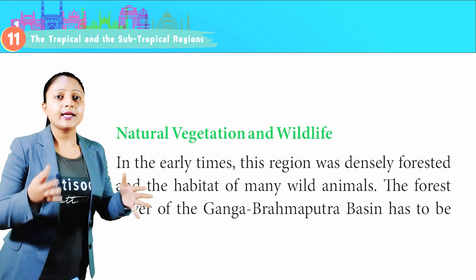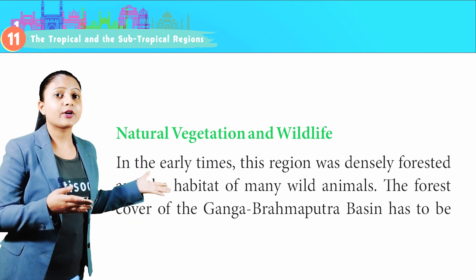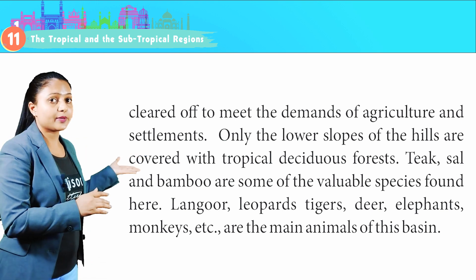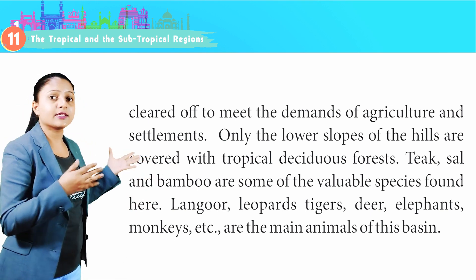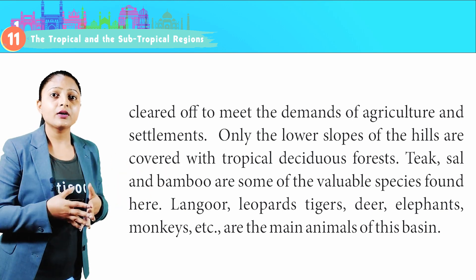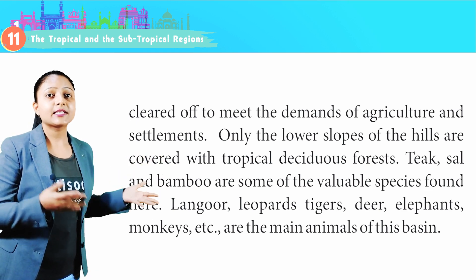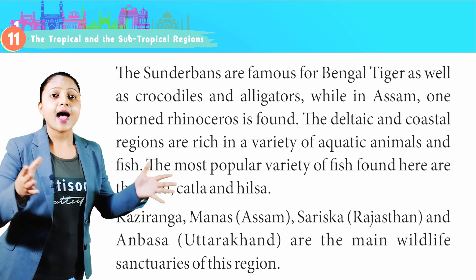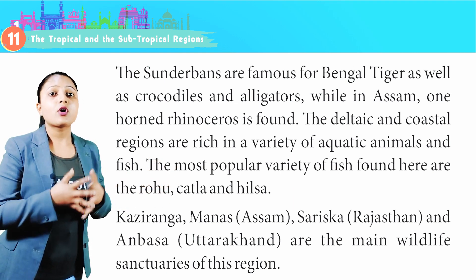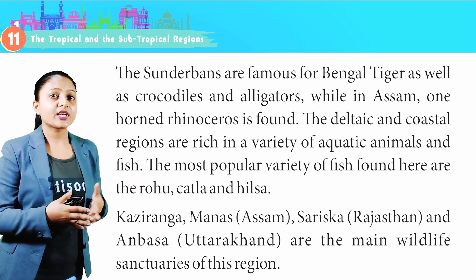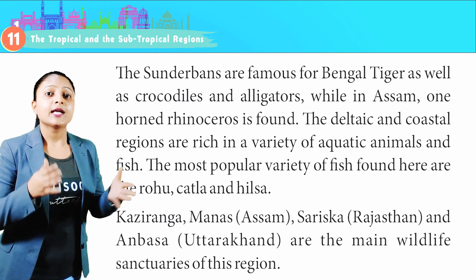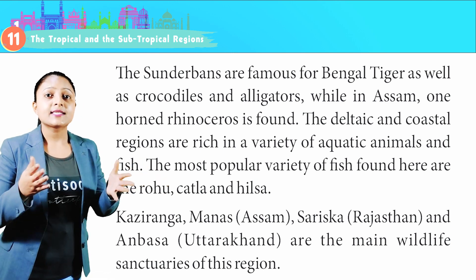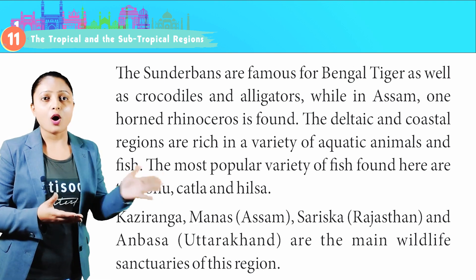Natural Vegetation and Wildlife: In early times, this region was densely forested and the habitat of many wild animals. The forest cover has been cleared to meet the demands of agriculture and settlements. Only the lower slopes of the hills are covered with tropical deciduous trees. Teak, sal and bamboo are some valuable species found here. Langurs, leopards, tigers, deer, elephants and monkeys are the main animals of this basin. The Sundarbans are famous for the Bengal tiger as well as crocodiles and alligators. In Assam, the one-horned rhinoceros is found. The delta and coastal regions are rich in aquatic animals and fish, including rohu, katla and hilsa. Kaziranga, Manas in Assam, Sariska in Rajasthan and Corbett in Uttarakhand are the main wildlife sanctuaries of this region.